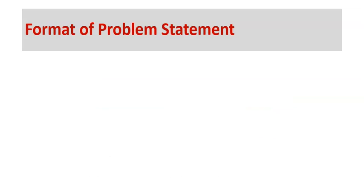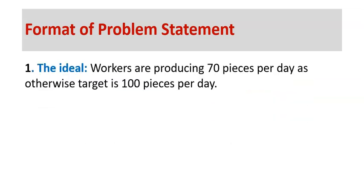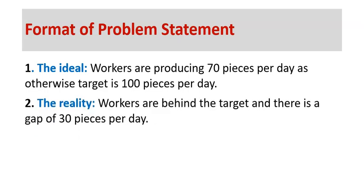This is the example. For example, there is a factory and workers have been given a target of 100 pieces production per day, but actually they are producing 70 pieces. The reality is that the target is 100 pieces, they are producing 70 pieces, and there is a gap of 30 pieces. Workers are behind the target with a gap of 30 pieces per day.